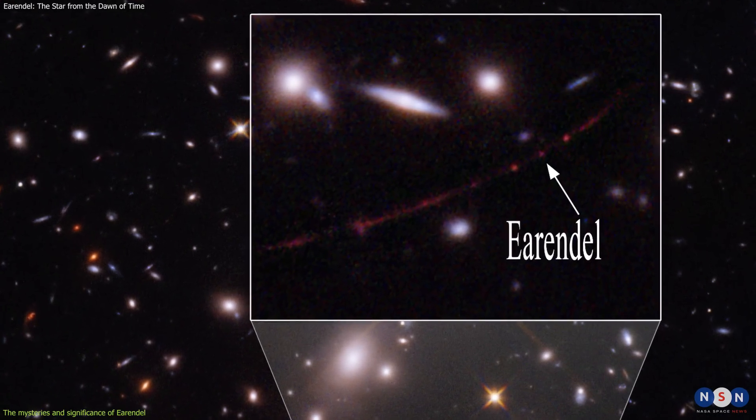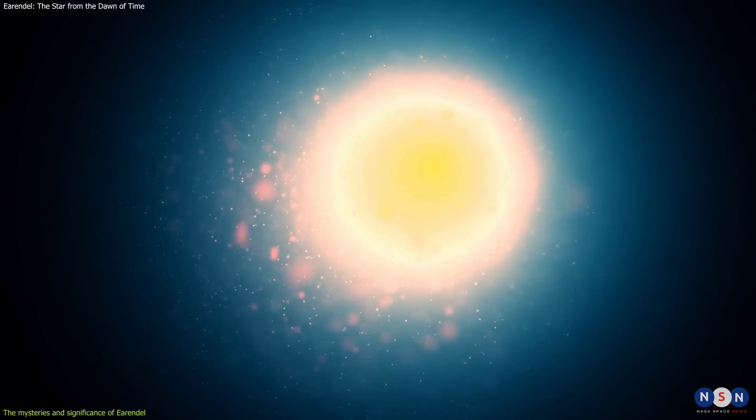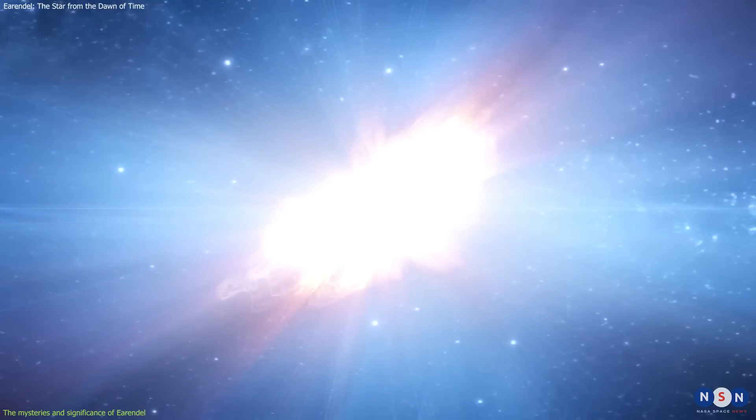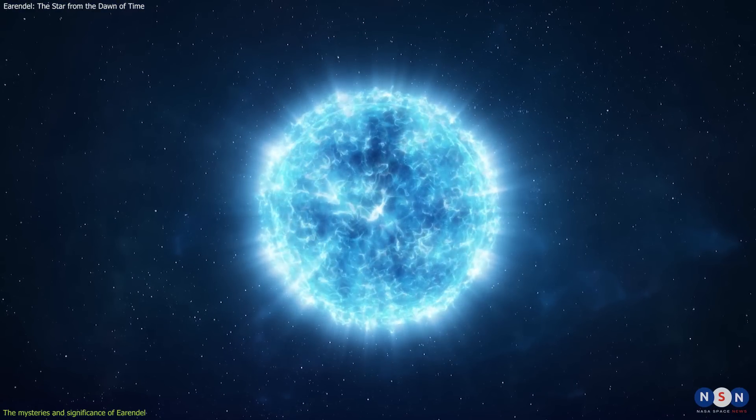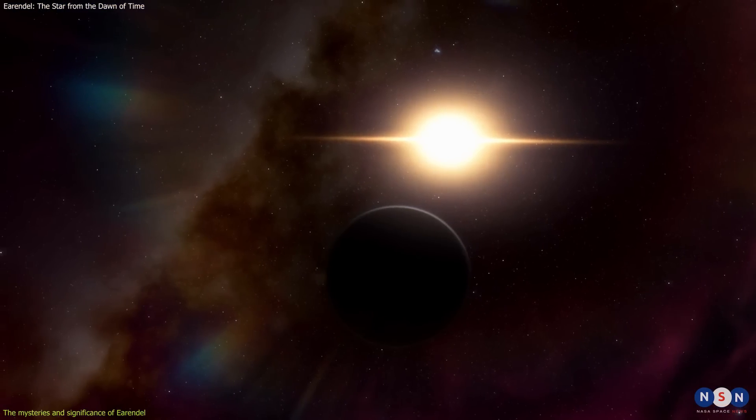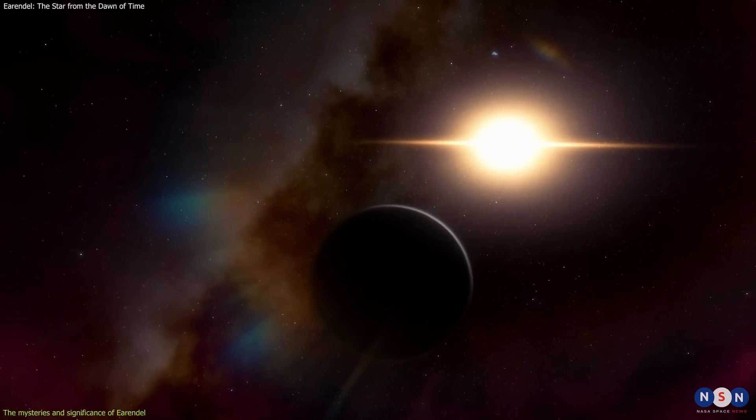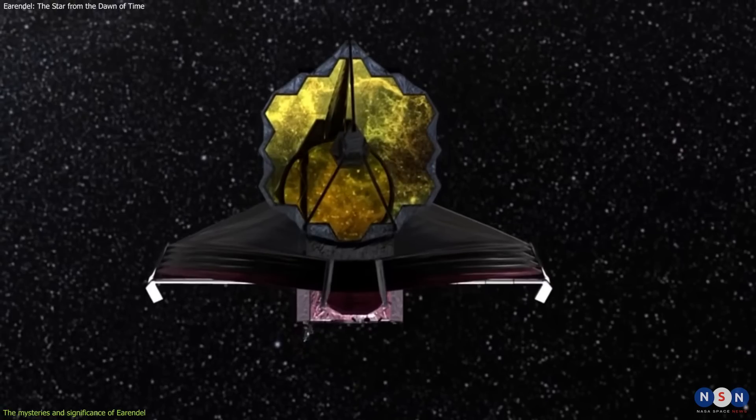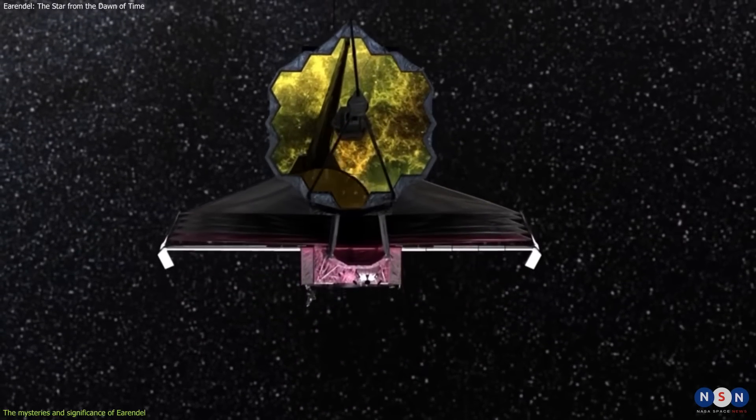Some of the questions that Earendel raises are: How did it form so early and so fast? How long did it live before exploding as a supernova? What did it look like when it was alive? Did it have any planets or companions around it? Webb will continue to explore these questions and more, as it observes Earendel and other distant objects with its powerful instruments.